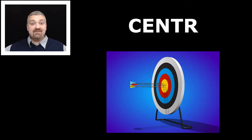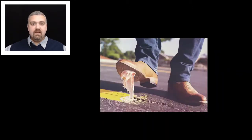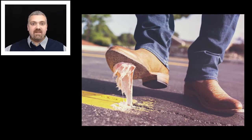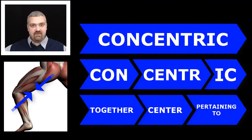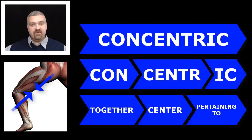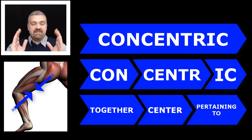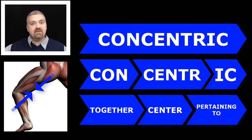First we have 'center,' which means at the center. A few words to help this stick in your gray matter — think 'concentric.' Con means to come together, centric means to the center. So concentric muscle contractions are contractions where the muscle is contracting and getting shorter. The muscle is being pulled to the center, to the belly of the muscle — traveling or coming together towards the center.